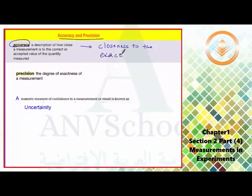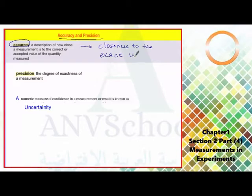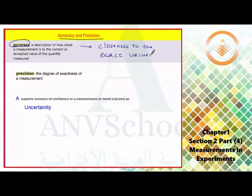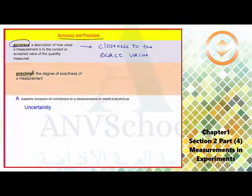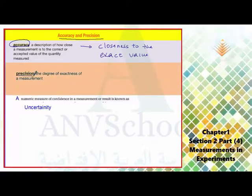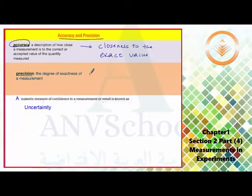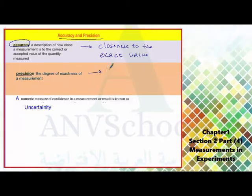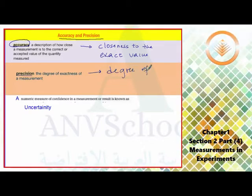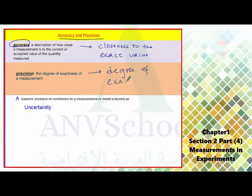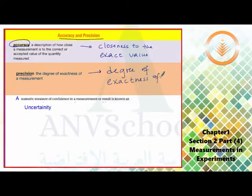The next is precision. What is the meaning of precision? Precision describes the degree of exactness of the given measurement. This describes the degree of exactness of a measurement.